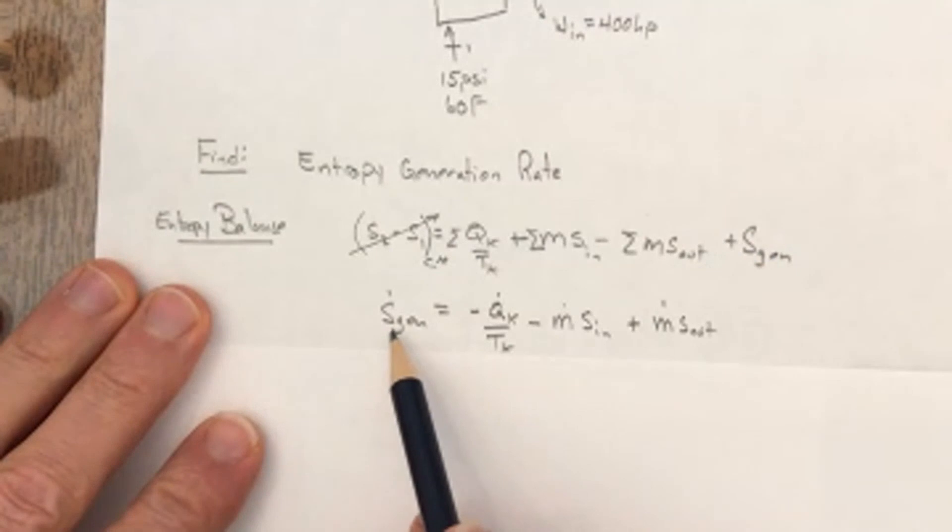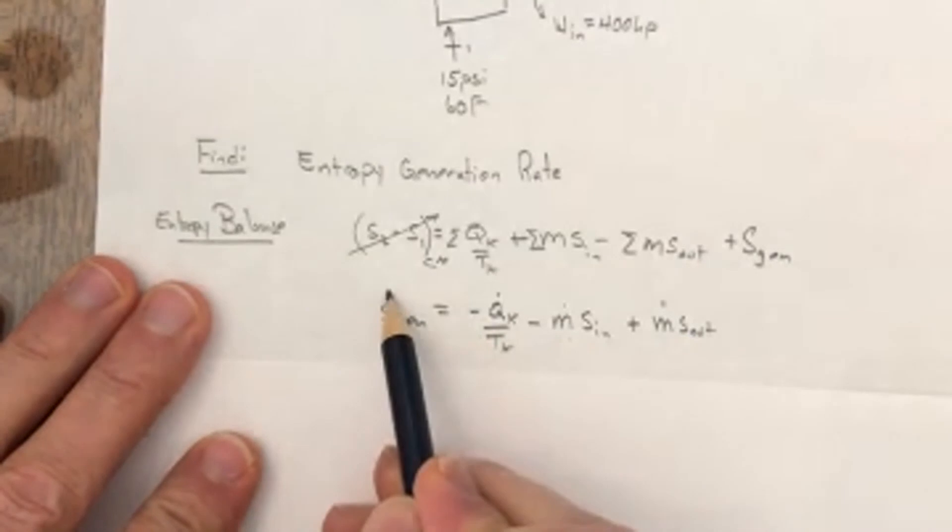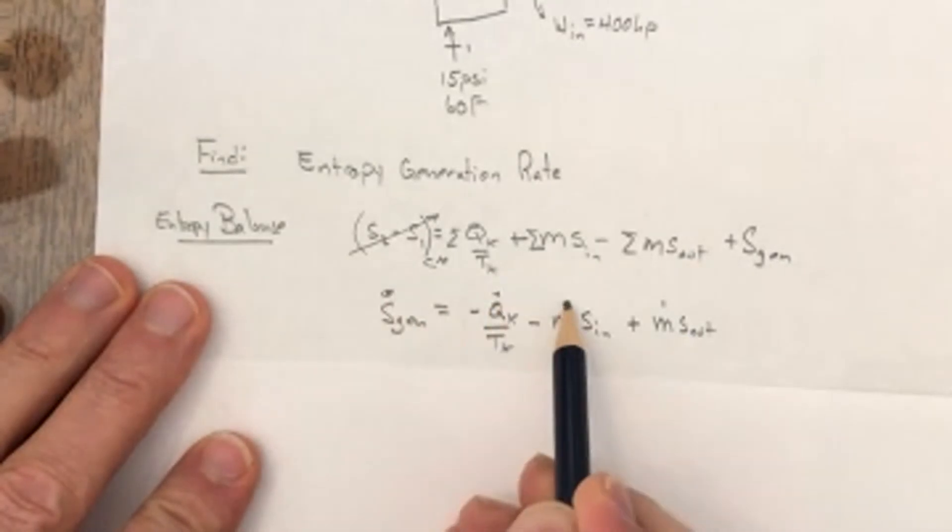So I could rearrange this equation for Sgen to be Sgen equals minus this heat exchange, and then minus the outs plus, or minus the ins plus the outs. I'm going to work in rate here, so I can just dot all of these.